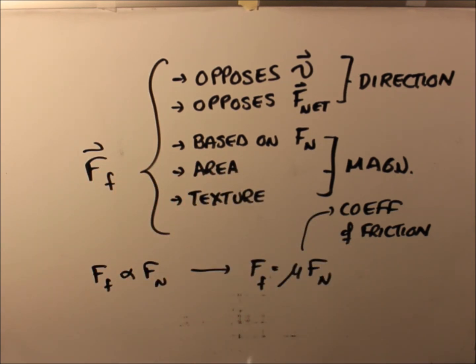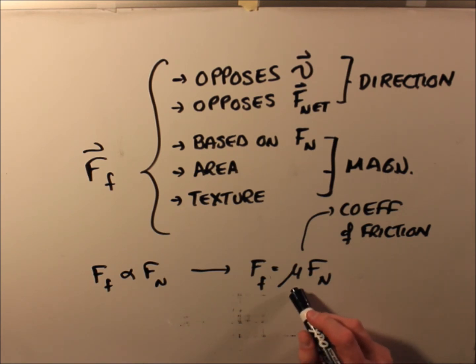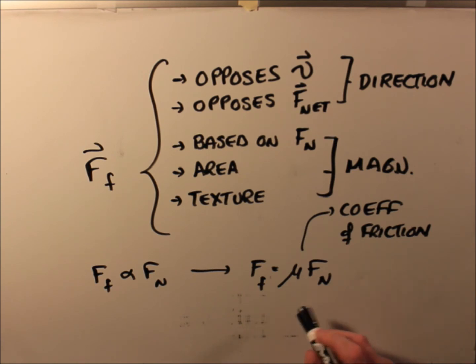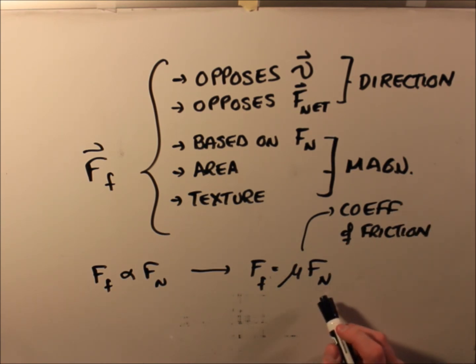So what happens instead is we surrender and we compute a coefficient based on these two ideas for the most part, called a coefficient of friction, in which this then removes this from proportionality to equality. So you have the force of friction is equal to the coefficient of friction times the normal force.